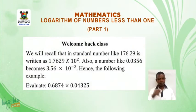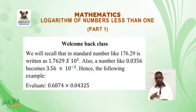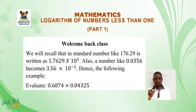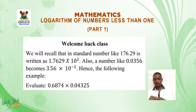Welcome back class. We shall recall that in standard form, a number like 176.29 is written as 1.7629 times 10 raised to power 2. Also, a number like 0.0356 becomes 3.56 times 10 raised to power minus 2. Hence the following example.